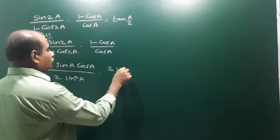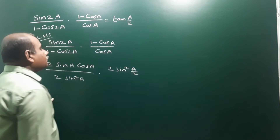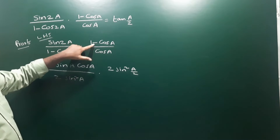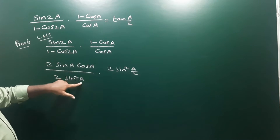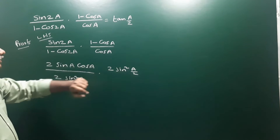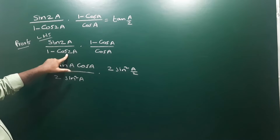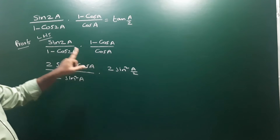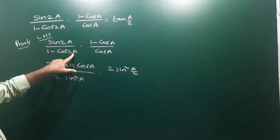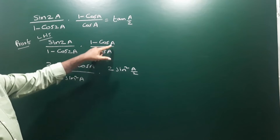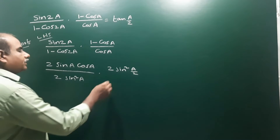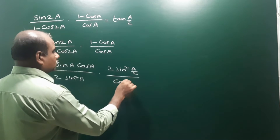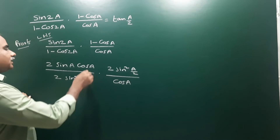This is the submultiple formula — when the angle is 2a, it becomes a; when the angle is a, it becomes a/2. So for 1 minus cos a, we use 2 sin²(a/2). The cos a in the denominator stays the same.